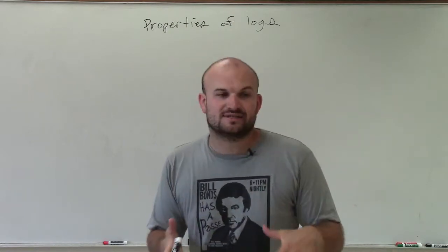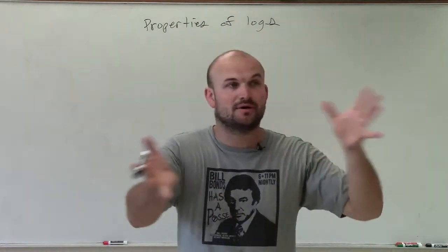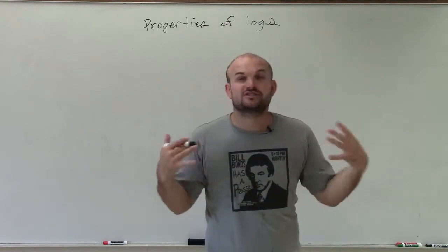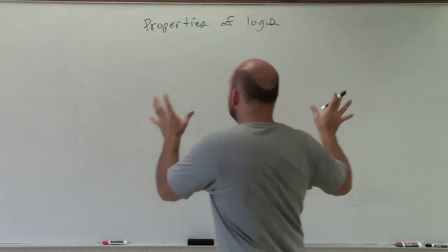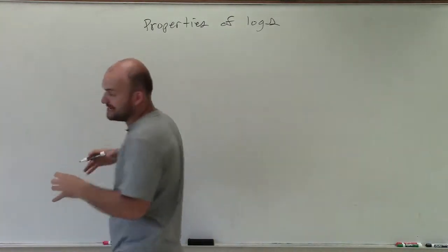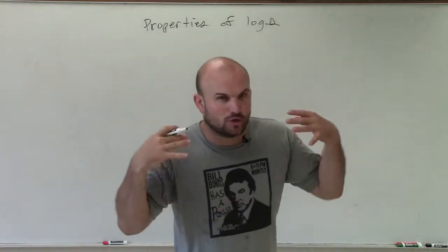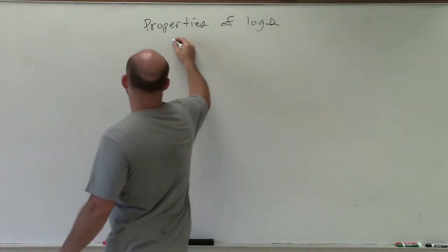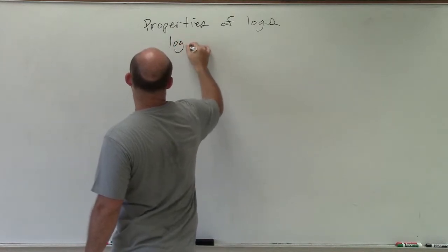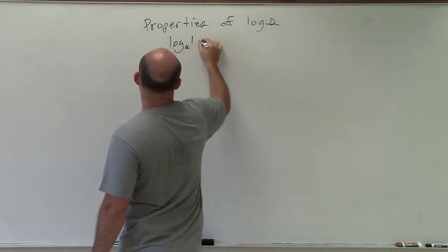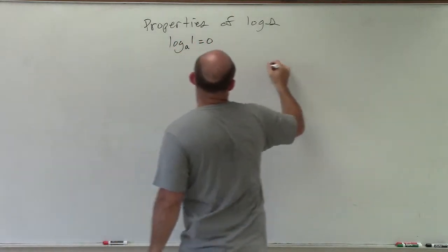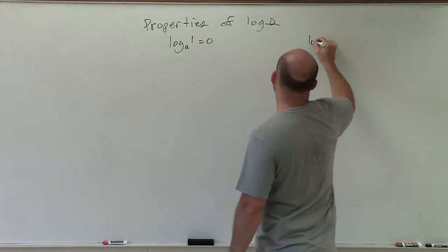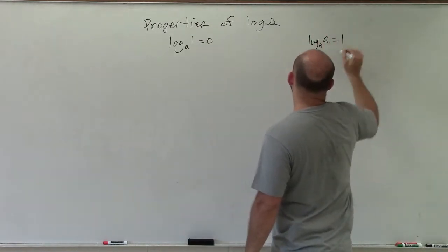Please note that if we use natural logarithms or a logarithm base 10, or any other base, they're still going to apply. The two basic properties that we need to understand — which really give us the idea of what logarithms are — are log base a of 1 is equal to 0, and log base a of a equals 1.